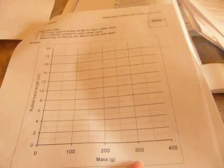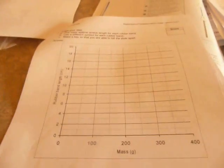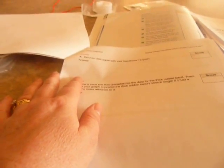After you plot the thin rubber band at 100, 200, and 300, and you plot the medium and the thick rubber band for all three of those, then you can go to the analysis. Did your data agree with your hypothesis? So a yes or no isn't enough. You also need to explain why or why not.